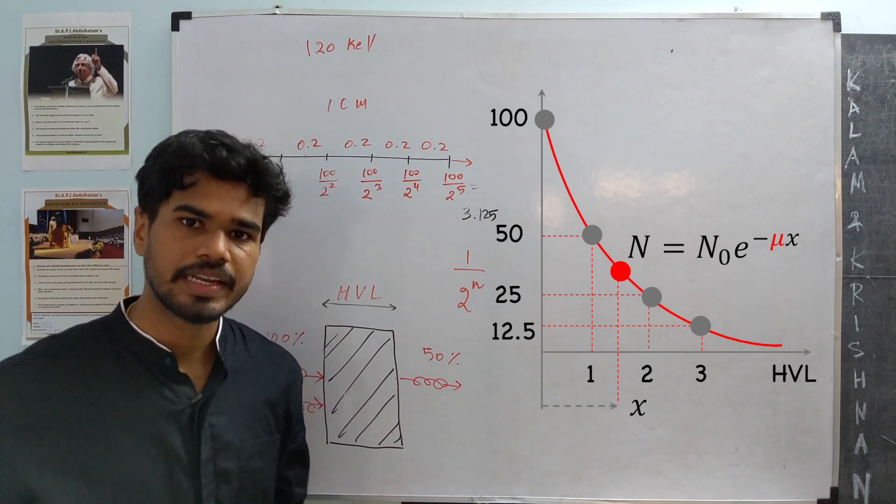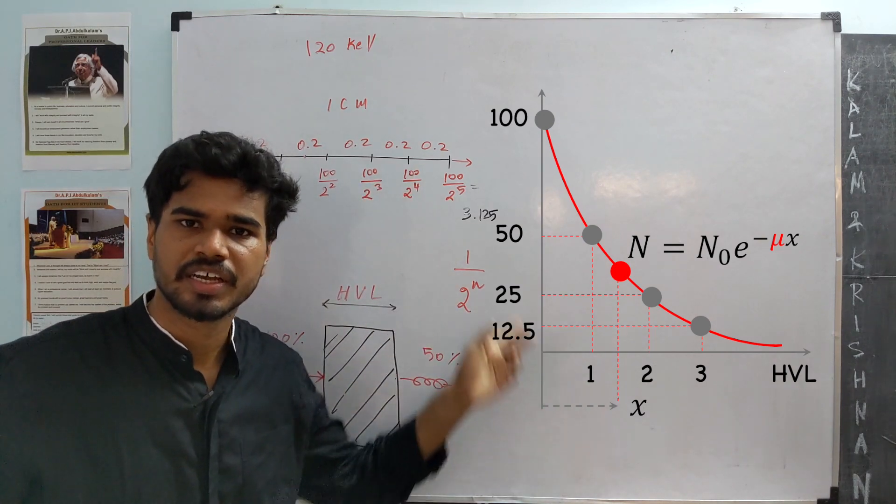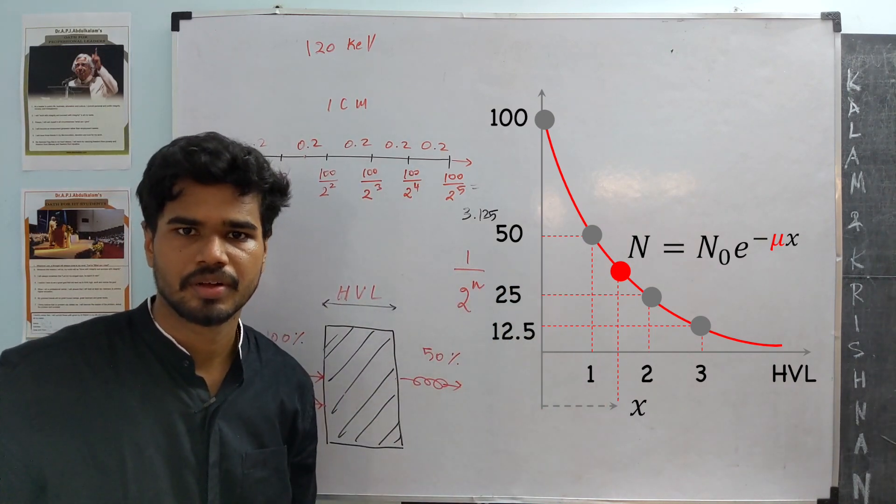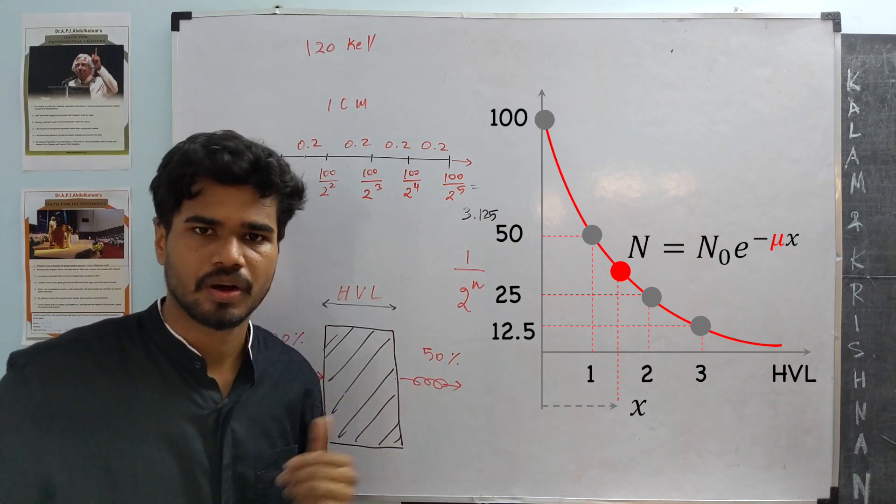Mu is known as the linear attenuation coefficient, where the constant describes the exponential drop. X is the amount of distance that photons pass through it.